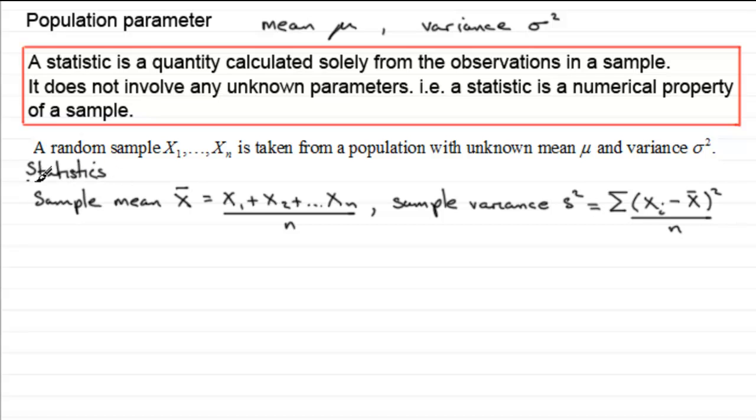Okay. So what wouldn't be a statistic? Well, a typical example, then, might be something like this, where we're doing the sum of our observations, xᵢ, from the sample, minus μ, for instance, squared. And all of this is divided by the number of observations in the sample.